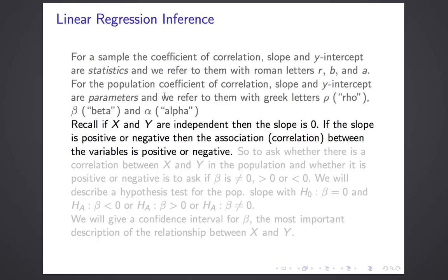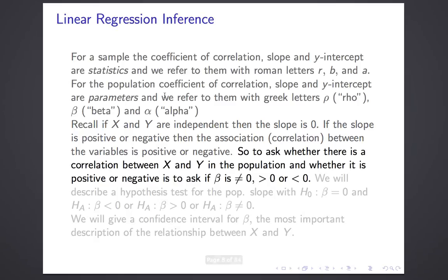On the other hand, if the slope is positive, then the variables are associated — in fact, positively associated. And if the slope is negative, they're negatively associated. So all that is to say: if you're interested in whether two variables are related, or whether they're positively or negatively correlated, you can phrase that question as asking whether beta is different from zero — that's how you'd say they're associated — or whether beta is greater than zero for positive association, or less than zero for negative association.